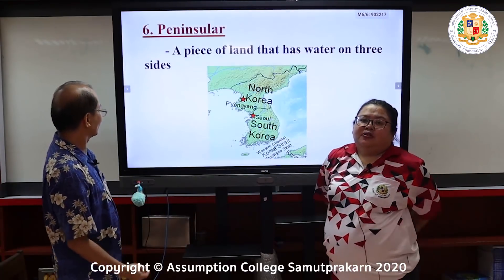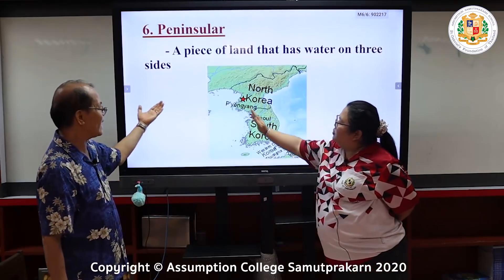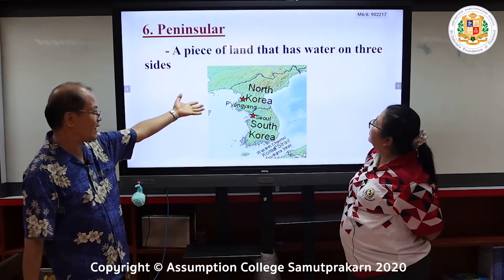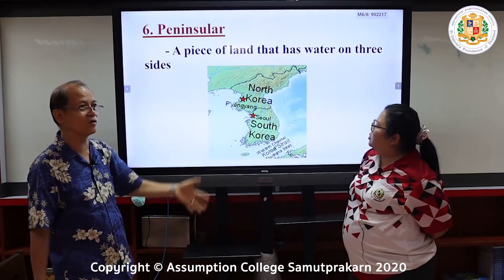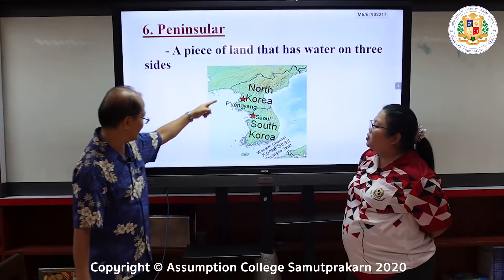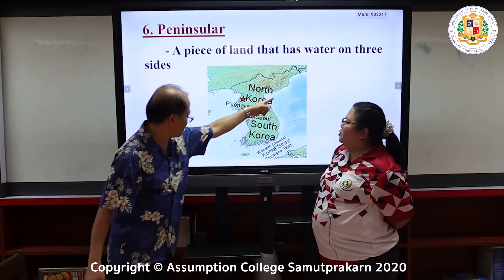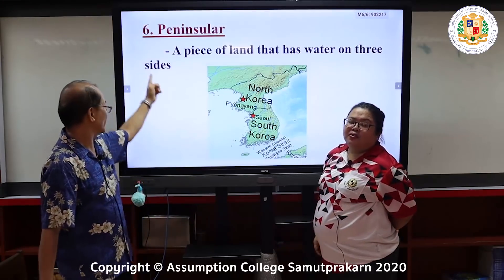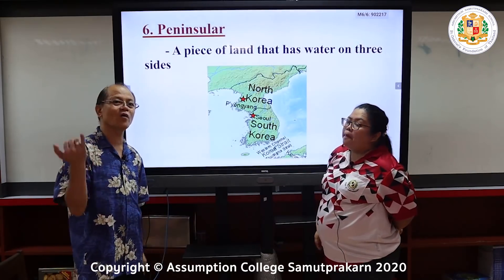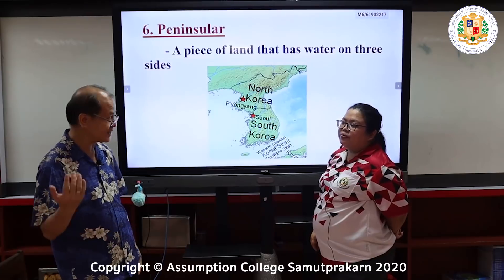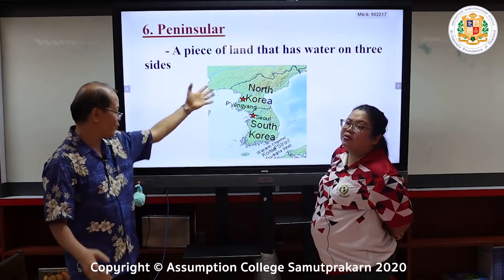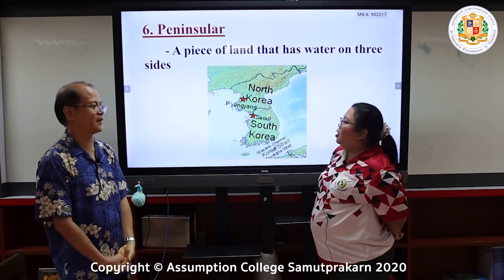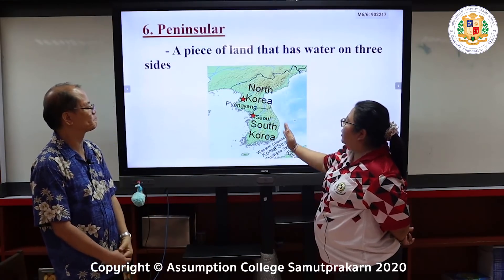A peninsula is a piece of land that has water on three sides. For example, Korea is called a peninsula — it has water on three sides. Malaysia is also a peninsula. In Asia, we have Korea and Malaysia as well-known peninsulas.